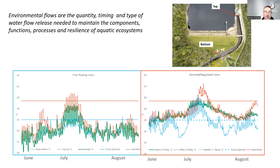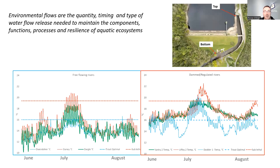Returning to regulated rivers: one management concept is environmental flows — the quantity, timing, and type of water flow release needed to maintain ecological processes. The Dodder receives water from both the top and bottom of the reservoir; water from the bottom is much cooler, which is why it has a cooler temperature profile. The Liffey, by contrast, only receives water from the top of the reservoir — it heats up in summer and is then released warm. We need to incorporate environmental flow management into regulated systems.